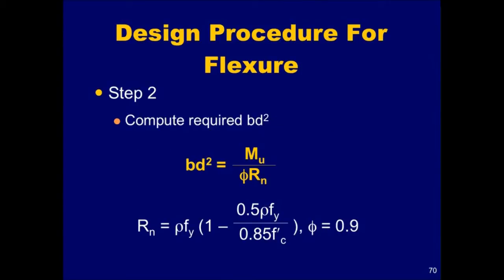In step two, the required bd squared for the factored bending moment, m sub u, is computed based on the reinforcement ratio that was assumed in step one. The quantity bd squared can be determined from the strength equation using the nominal strength coefficient, r sub n.